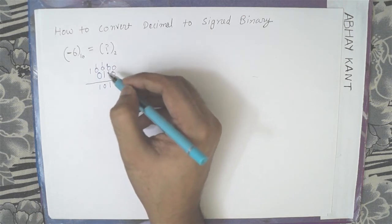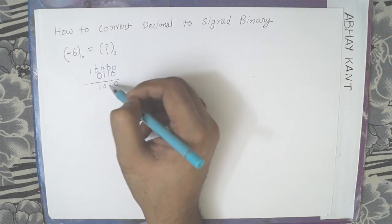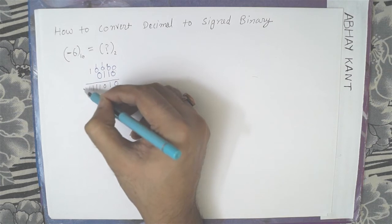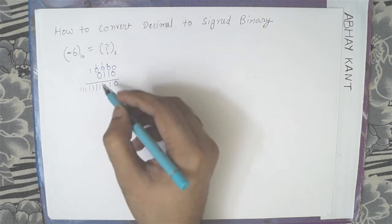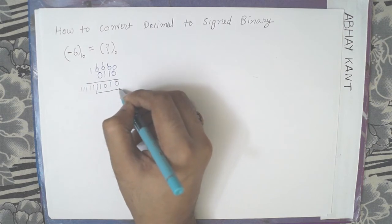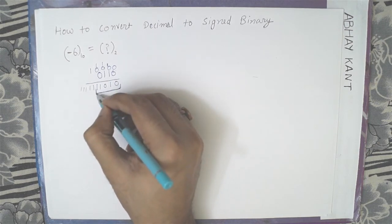And since this is a negative number, so the 1 goes on. Since this is a 5 bit number, we are going to use only these numbers.